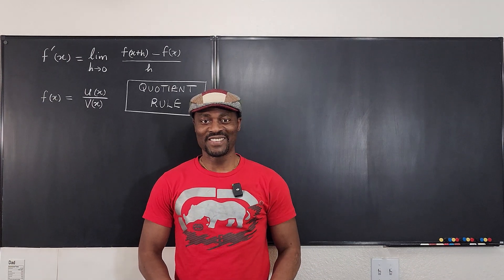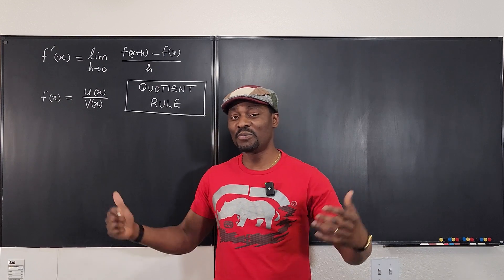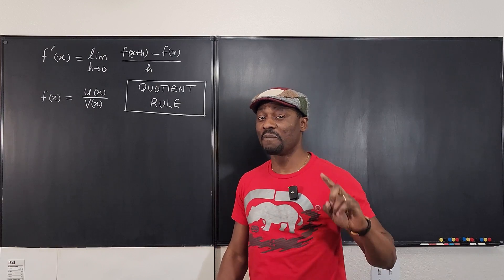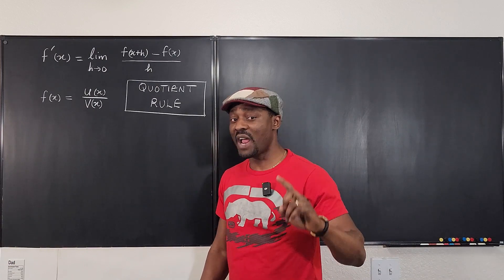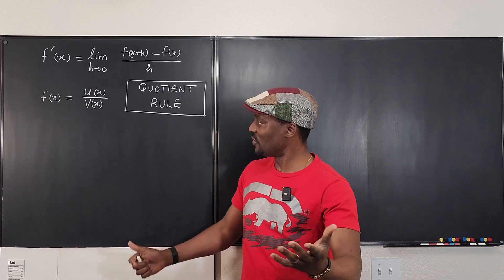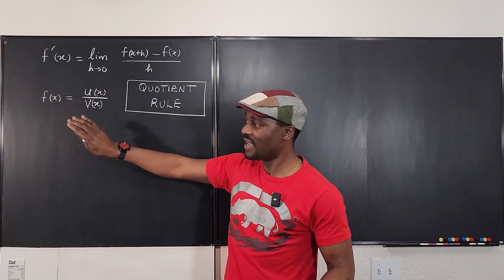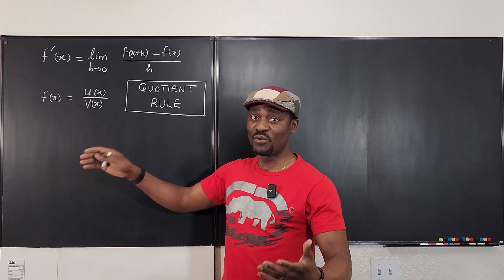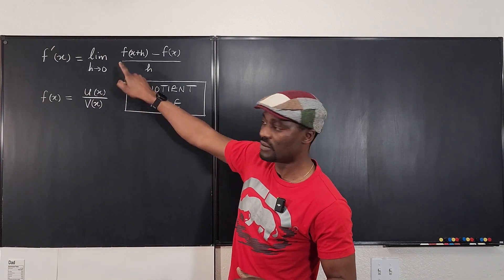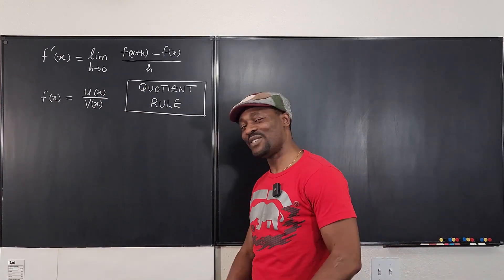Hello! Welcome to another video. This is a video I have desired to do for a while but kept postponing. Today we want to see how we go from differentiation of a rational function from first principles to the quotient rule. Whenever you have a function of x divided by a function of x and you want to take the derivative, we usually use the quotient rule, but we want to see how we derive it. Let's get into the video.